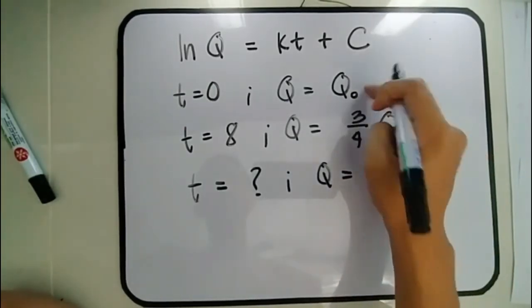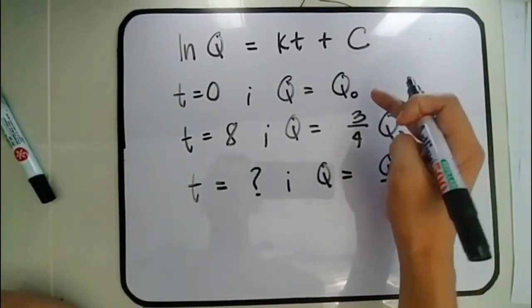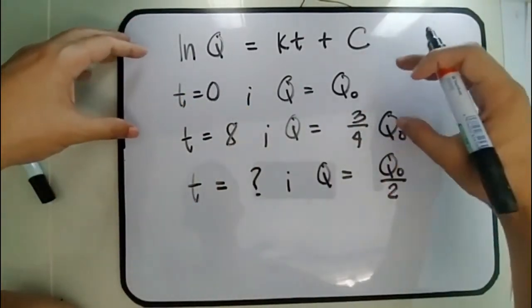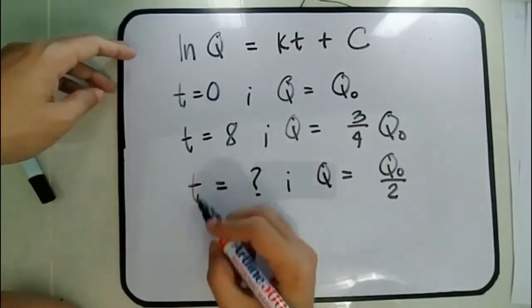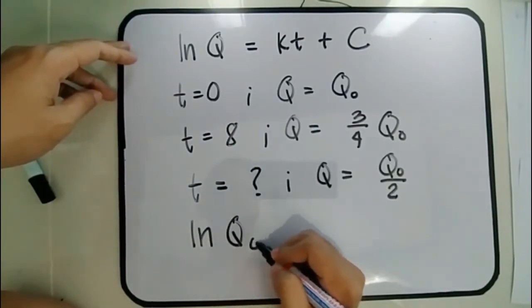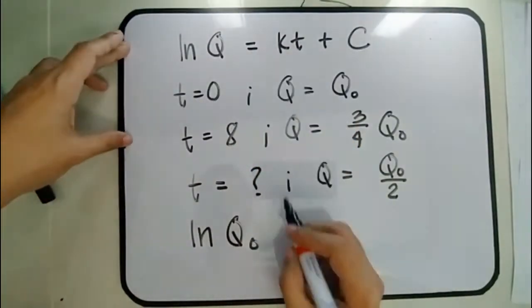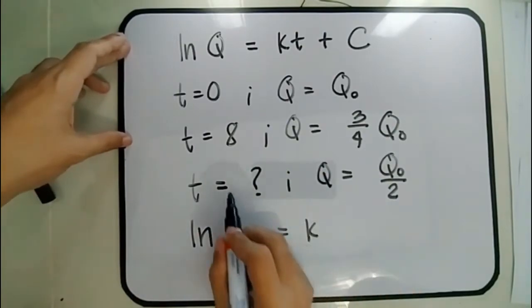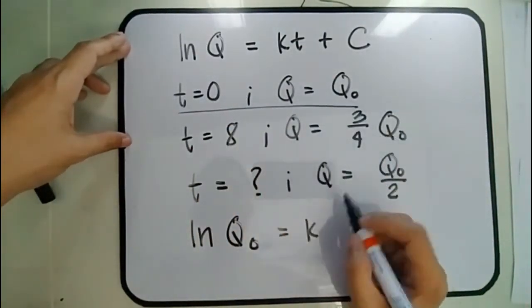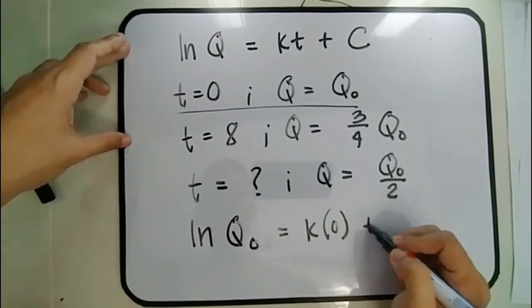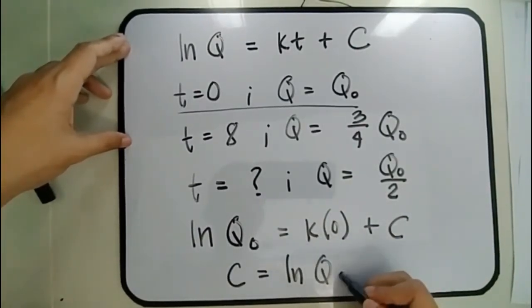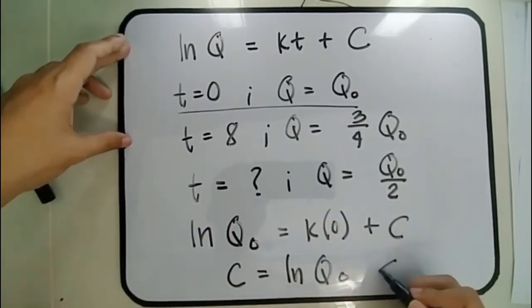Applying the first boundary condition: ln(Q₀) = K(0) + C, so C = ln(Q₀). For the second boundary condition: ln((3/4)Q₀) = 8K + ln(Q₀).